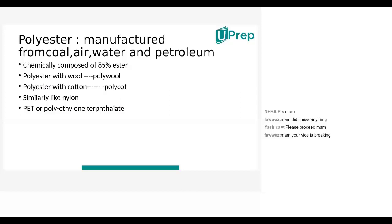Polyester can be blended with other fibers to enhance quality. Polyester with wool is called polywool, and polyester with cotton is called polycott. These are semi-synthetic blends. Polyester is similar to nylon but lighter. It is used especially in the textile industry, including for PET — polyethylene terephthalate.